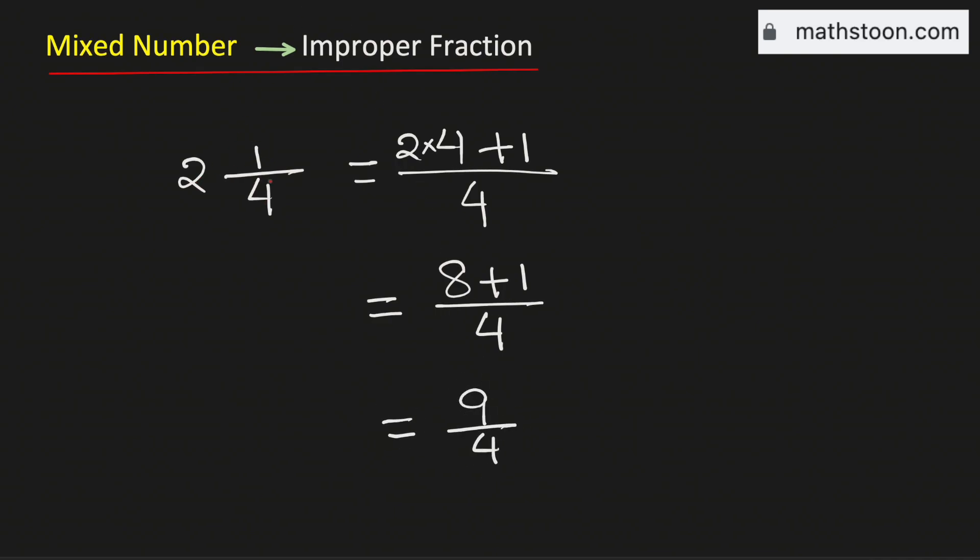Therefore, 2 and 1/4 as an improper fraction is equal to 9 over 4. And this is our final answer.